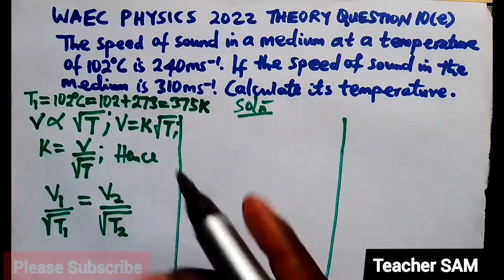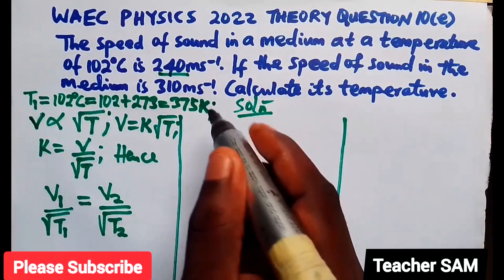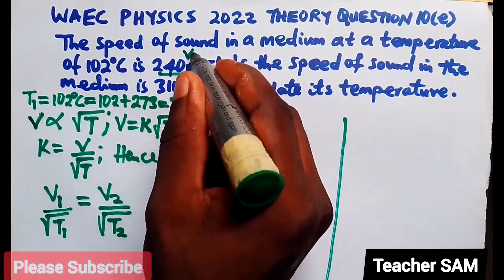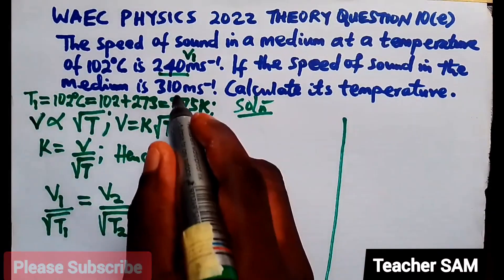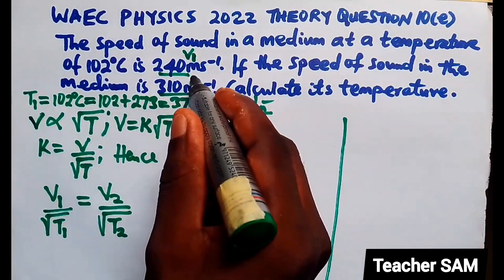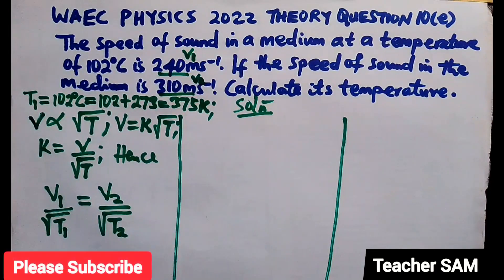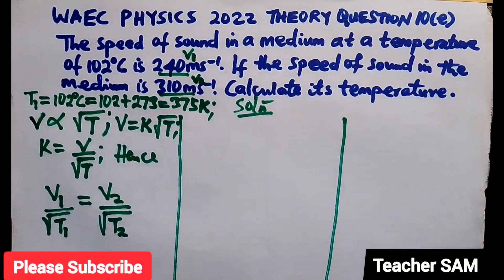So, we're going to substitute this. Every other values have been given to us. The velocity, this one is our V1. This is our V1. Now, you come here again. This place here, our V2. So, this is our V2. So, we have V1. We have V2. So, all we need now is to find the second temperature as requested by the equation.